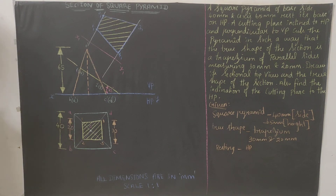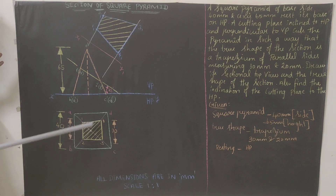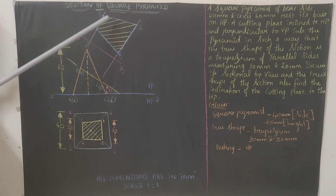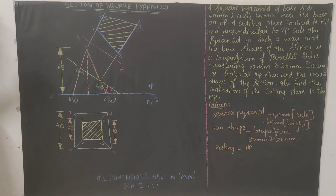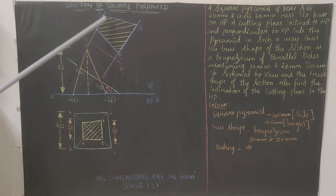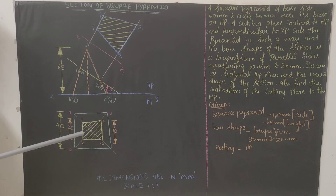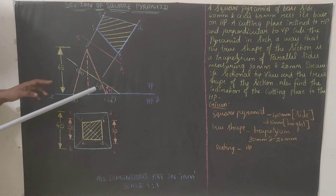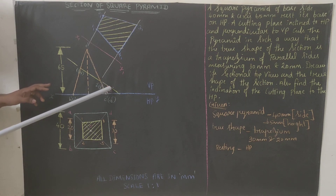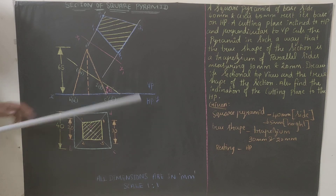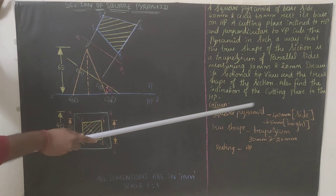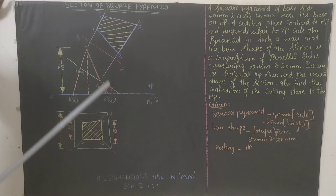Hatching must be drawn at 45 degrees — correct any mistake in hatching direction, as it will cost only 1 or 2 marks but try to keep it accurate. The diagram obtained is the true shape of the section, and the sectional top view is complete. Now mark the angle of the cutting plane. If you measure the cutting plane angle, you will get 23 degrees. The question asks to find the inclination of the cutting plane with respect to HP — the answer is 23 degrees.